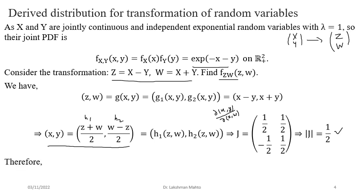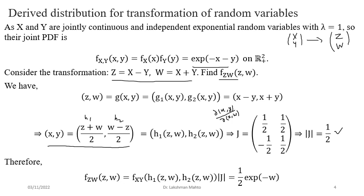Applying the derived distribution concept: the joint distribution of Z and W equals the joint distribution of X, Y evaluated at h1(z,w) and h2(z,w), times the Jacobian factor. Since X + Y = W, the exponent simplifies to e^(−W). Therefore the joint distribution of Z and W equals (1/2)·e^(−W). We have obtained the explicit form of the joint distribution of Z and W.